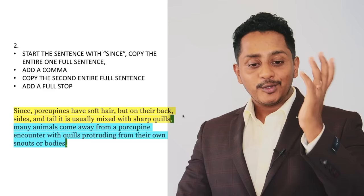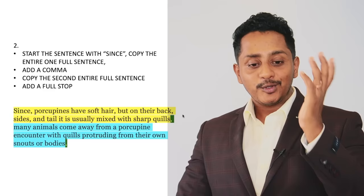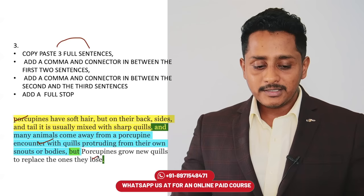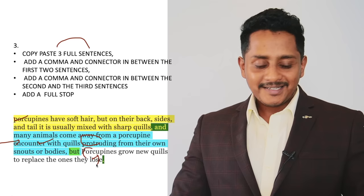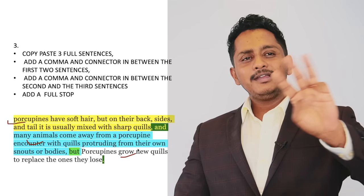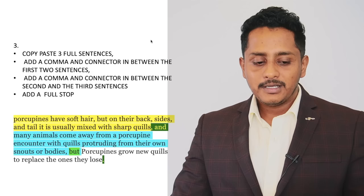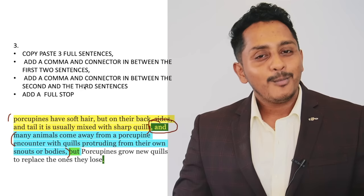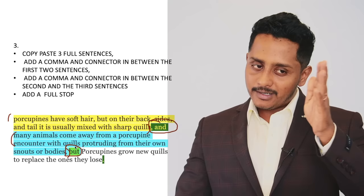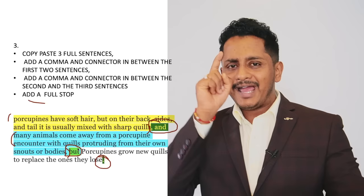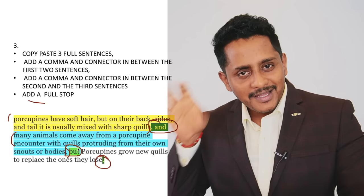Even after doing this, if the word length is very short, take up strategy three. Copy-paste three full sentences — one highlighted, a second, and a third. These three full sentences are taken at random, not half sentences. Add a comma and connector in between the first and second sentence. Then add a comma and connector in between the second and third sentence, followed by a full stop. Grammar-wise this is precise — you don't need third-party applications to check. It will give full marks.